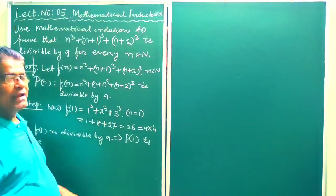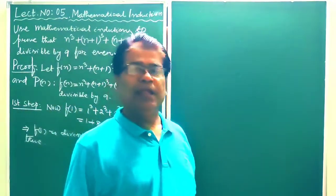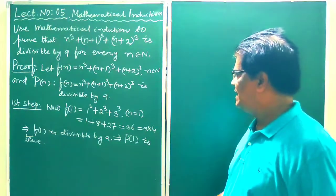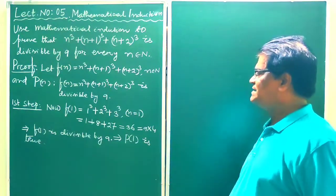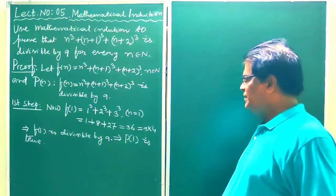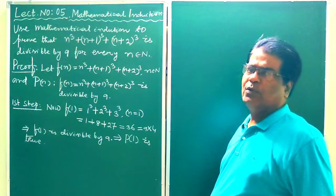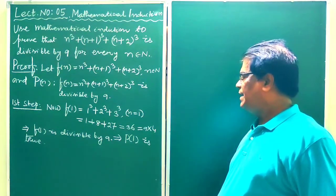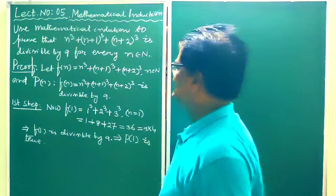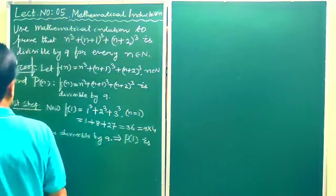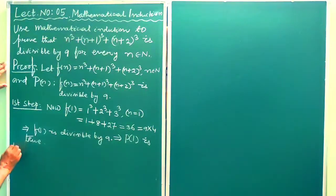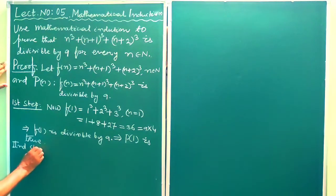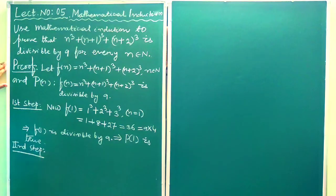So for n = 1, f(1) = 36, which is divisible by 9. Therefore P(1) is true. The first step is complete. Now second step.